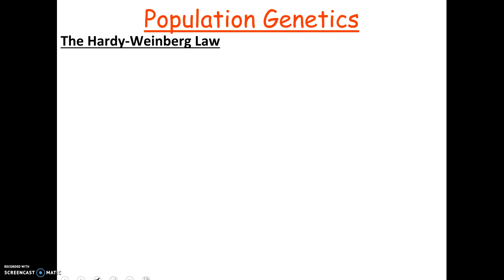Today we're going to talk about population genetics and Hardy-Weinberg law. Population genetics is where we combine evolution with genetics. When you think about evolution, remember that populations evolve because their gene frequencies change — meaning how common certain traits are, which are genetically determined. Those commonalities can change over time due to natural selection, mutations, migration, and other factors. So when we talk about evolution, we have to include a little bit of genetics.